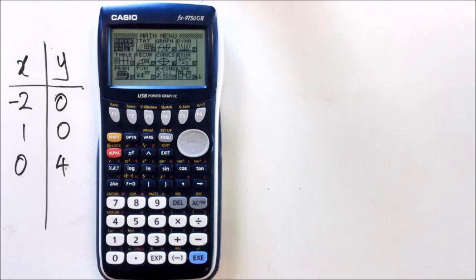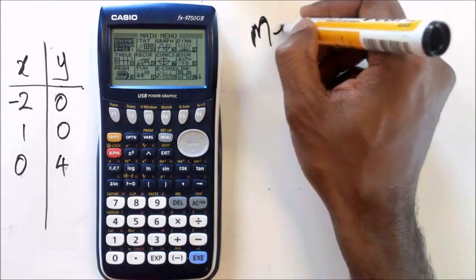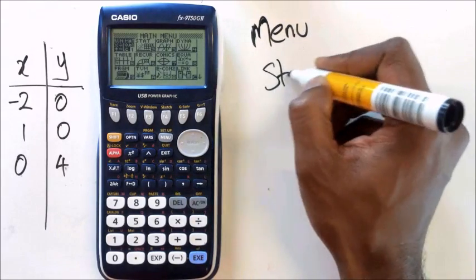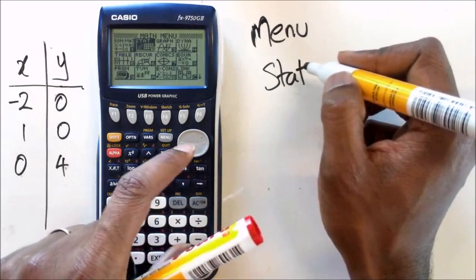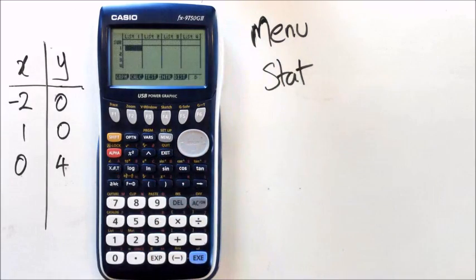So to do this, nothing different from what you did in terms of finding a linear equation. So click on menu and go into stat. Alright, you're back at list 1 and list 2.